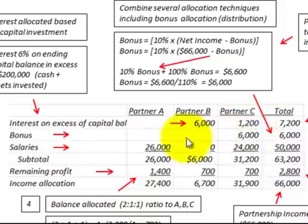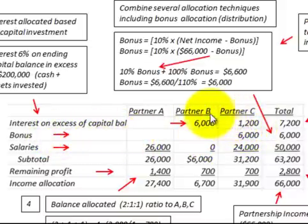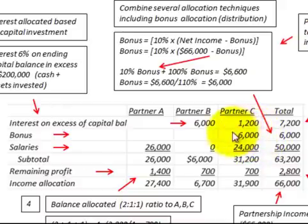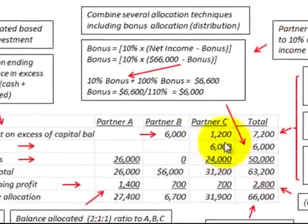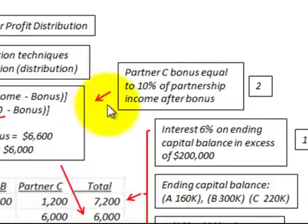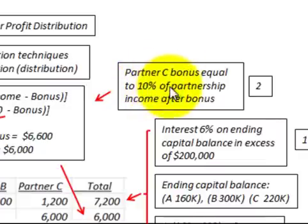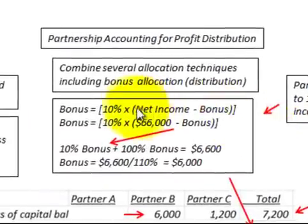The next thing we have to look at is the bonus. In this case, there's only going to be a bonus allocated to Partner C per the partnership agreement, and it's going to be $6,000. Partner C gets a bonus equal to 10% of the partnership income after the bonus.